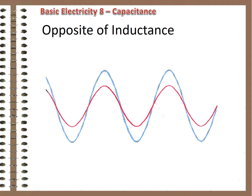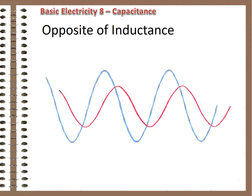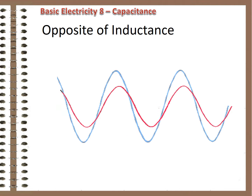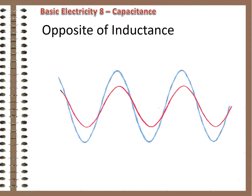Of course it eventually does, but in the same way that the effect of inductance causes a delay in the change of current flow, this effect causes a delay in the change in voltage — and this is happening 60 times a second. The effect is called capacitance, and equal amounts of it cancel out the effect of inductance.